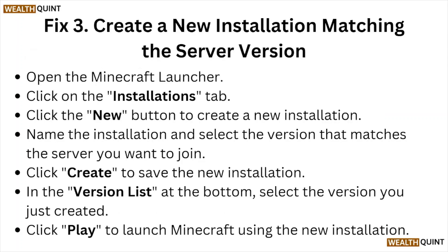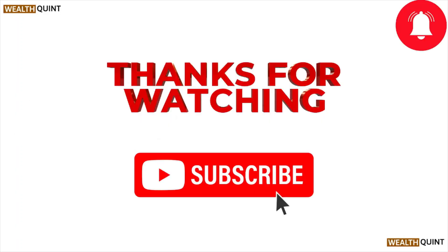Fix number three: create a new installation matching the server version. Open the Minecraft launcher and click on the 'Installations' tab. Click the 'New' button to create a new installation, name it, and select the version that matches the server you want to join. Click 'Create' to save it. In the version list at the bottom, select the version you just created and click 'Play' to launch Minecraft using the new installation.